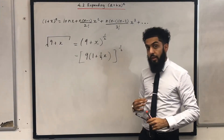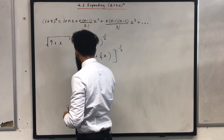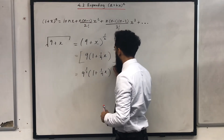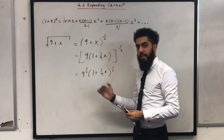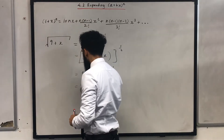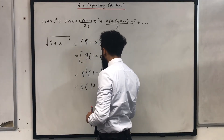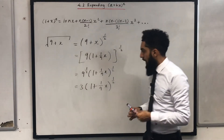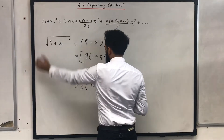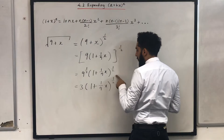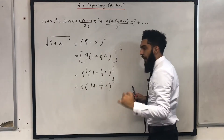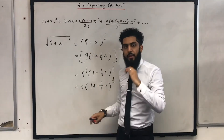The next thing I can do is write this as 9 to the power 1/2, times bracket (1 + (1/9)x) to the power 1/2. I can simplify 9 to the power 1/2 to give me 3, times bracket (1 + (1/9)x) to the power 1/2. Now I can see that inside the bracket the first term is 1, so I can now expand this bracket to the power 1/2 using the binomial expansion formula. Once I've expanded this, I multiply each term by 3 as my final step.